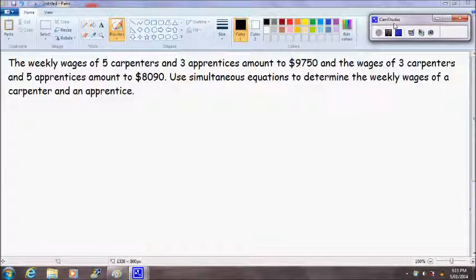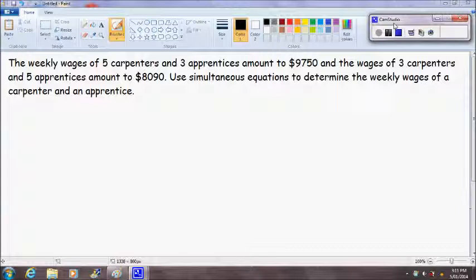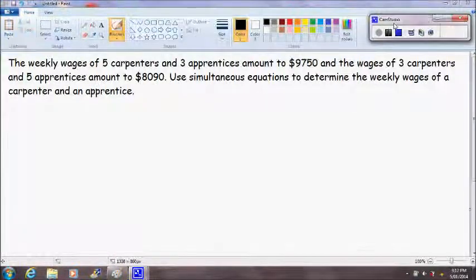Hello and welcome. In this video we're going to use simultaneous equations to solve a simple problem of money. The problem we have is the weekly wages of five carpenters and three apprentices amount to $9,750, and the wages of three carpenters and five apprentices amount to $8,090. Use simultaneous equations to determine the weekly wages of a carpenter and an apprentice.